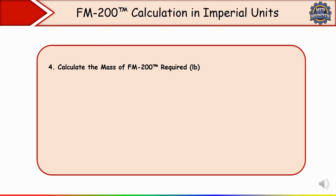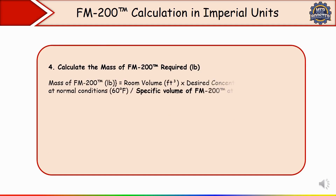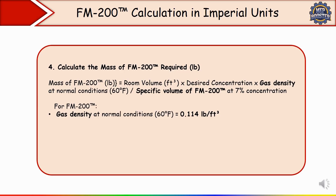The fourth step is to calculate the mass of FM 200 required in pounds. The formula is: Mass of FM 200 = (Room Volume in cubic feet × Desired Concentration × Gas Density at normal condition at 60°F) ÷ Specific Volume of FM 200 at 7% concentration. The room volume you get from the layout. For most cases, desired concentration is 7%. The FM 200 gas density at normal condition is 0.114 pounds per cubic foot, and the specific volume of FM 200 at 7% concentration is 1.435 cubic feet per pound. Substitute these values to get the mass of FM 200.